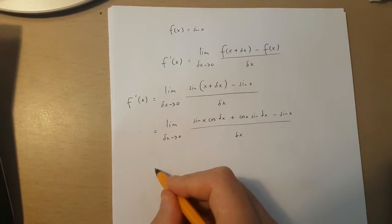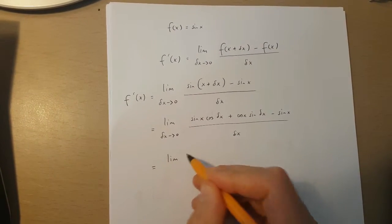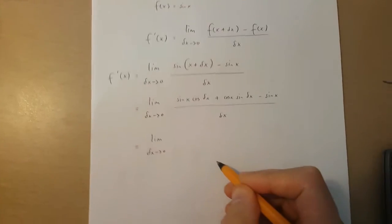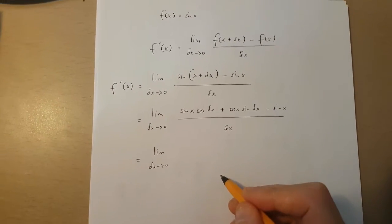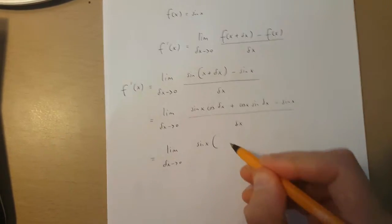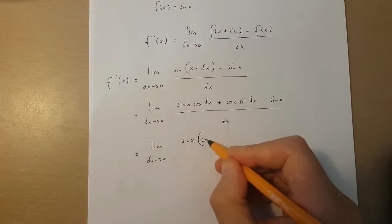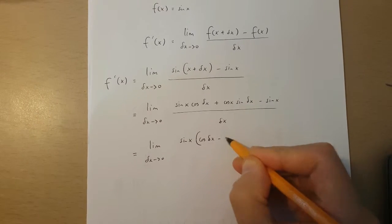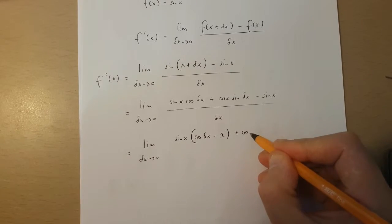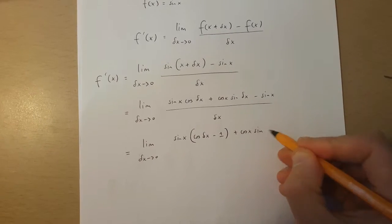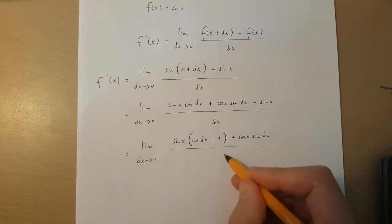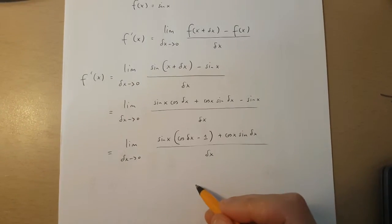So we get equal to, in the limit, as change in x approaches 0, sin x multiplied by cos change in x minus 1, plus cos x sine change in x, all over change in x.